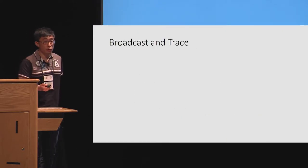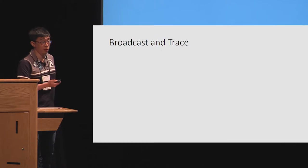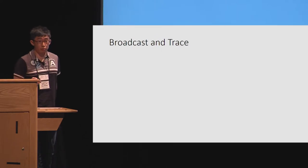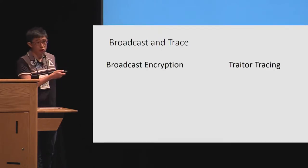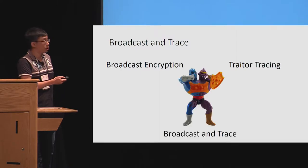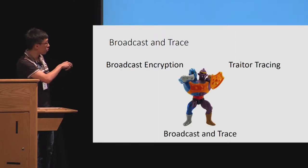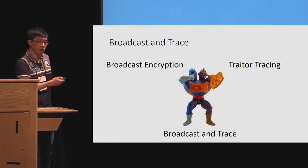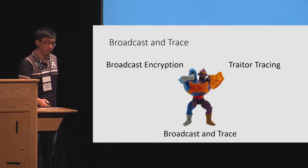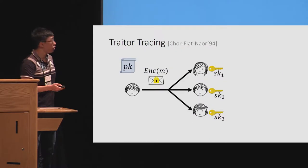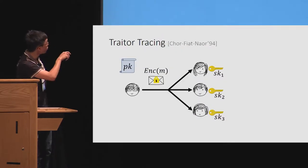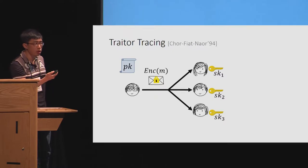In a nutshell, Broadcast and Trace combines two different primitives — Broadcast Encryption and Traitor Tracing — in such a way that the combined protocol is more powerful than taking the two primitives individually. Let me review what Traitor Tracing and Broadcast Encryption are.